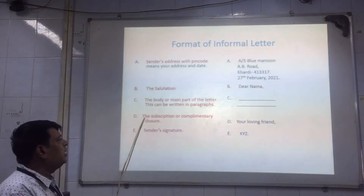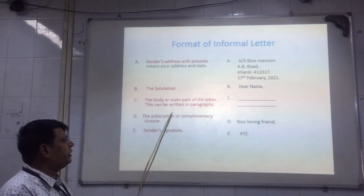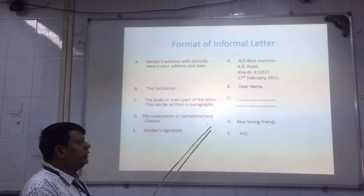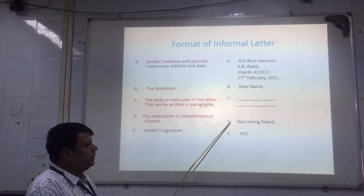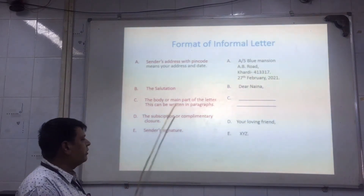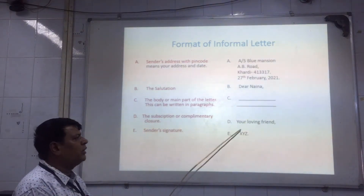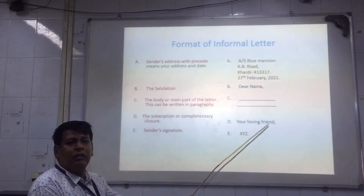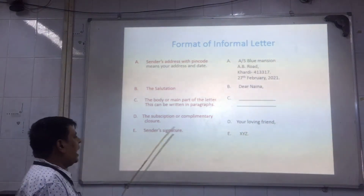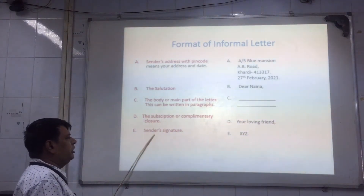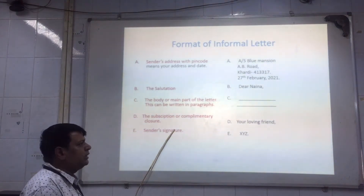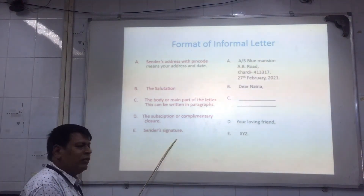Part D is the subscription or complimentary closure. After leaving one line, write 'Your loving friend' on the left-hand side. Then Part E is the sender's signature — your own name.